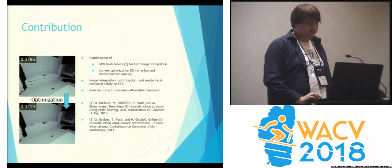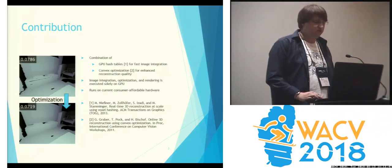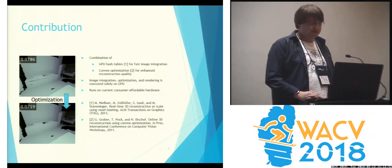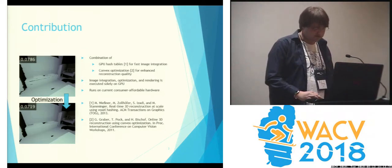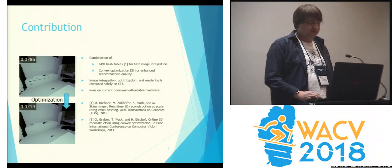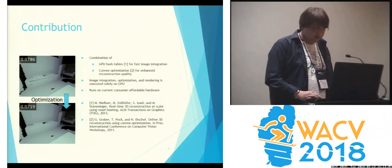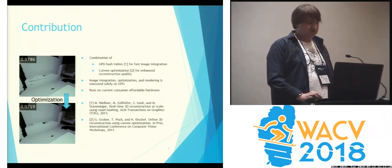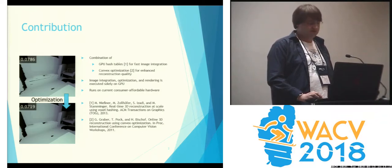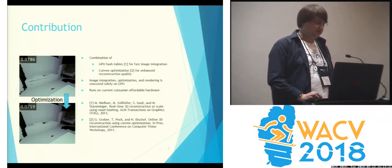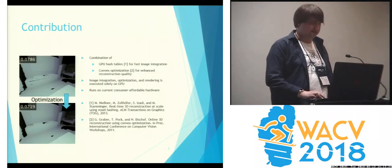Essentially, we combined two algorithms. We started with GPU hash tables for fast image integration and fast memory access — described by Niesner, Zollhofer, Isadi and Stemminger — and we combined this with a convex optimization algorithm for enhanced reconstruction quality, described by Graeber, Pock and Bischoff. Our image integration, optimization and rendering are all executed on the GPU and run on current consumer-affordable hardware in real time at interactive frame rates of about 30 frames per second.